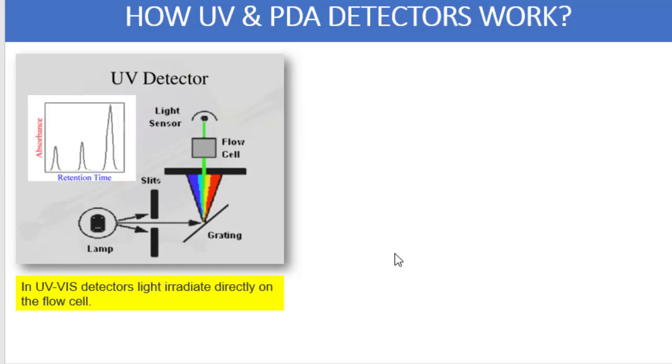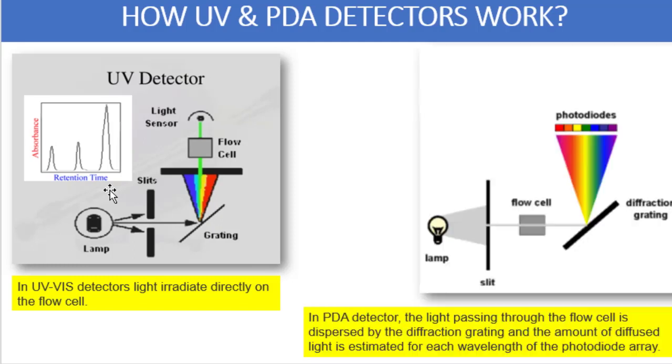We know that in HPLC the light absorbed is reflected as the signal. You can see on the chromatogram over here that there are three different peaks observed, and on the x-axis there is retention time and on the y-axis it is the absorbance. Let us now understand how the PDA detector works. If you look at the construction of the PDA detector it is a lamp followed by a slit, then immediately flow cell, followed by diffraction grating, and then there is a photodiode array on top of it.